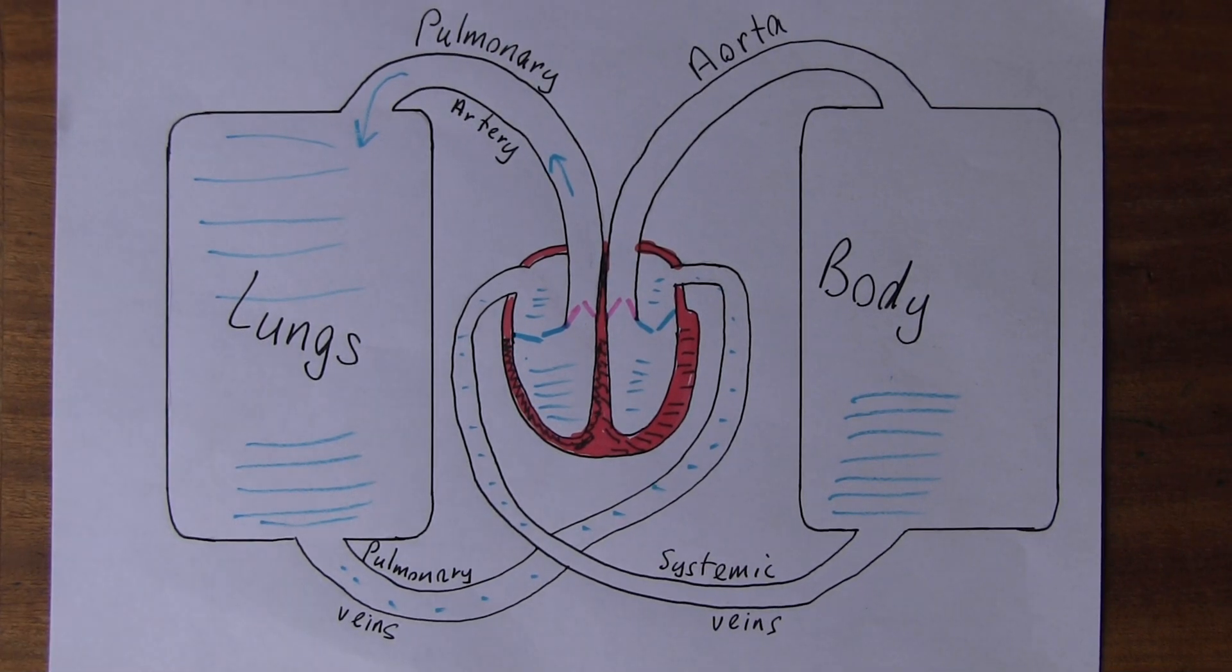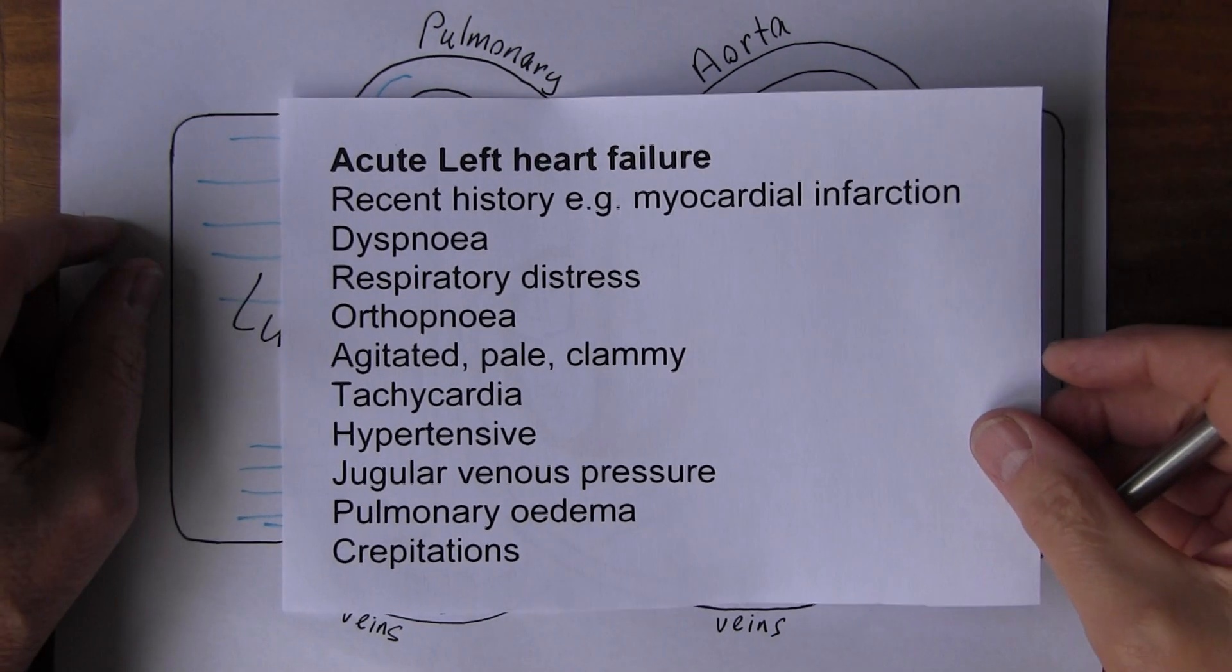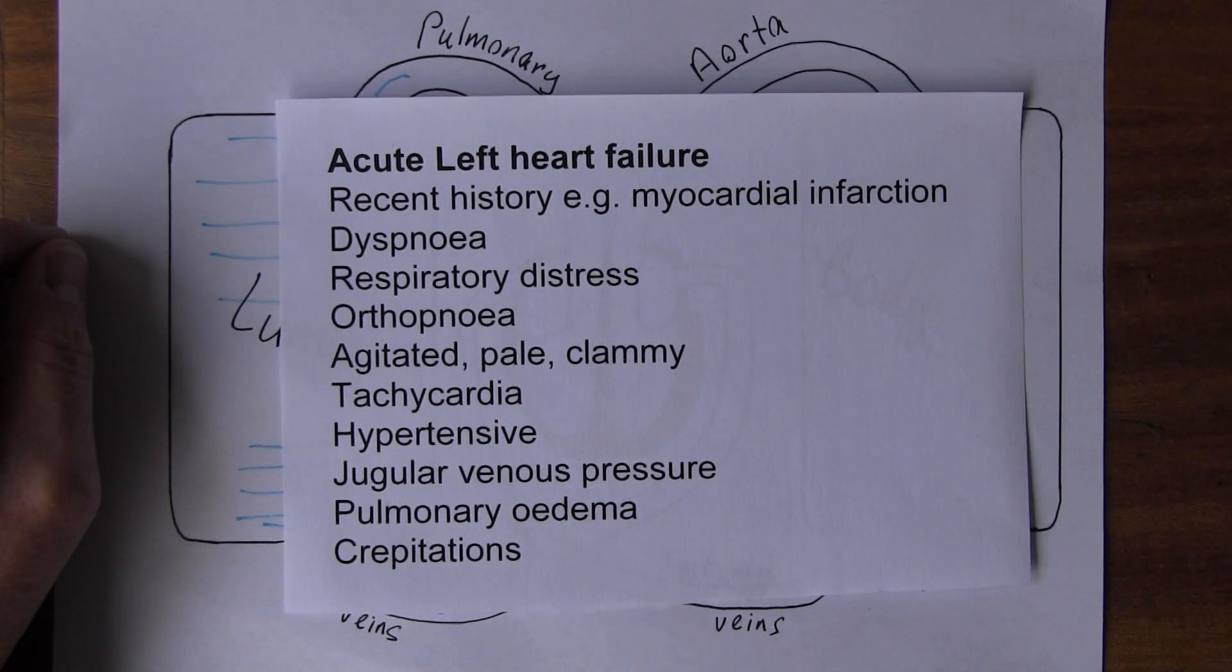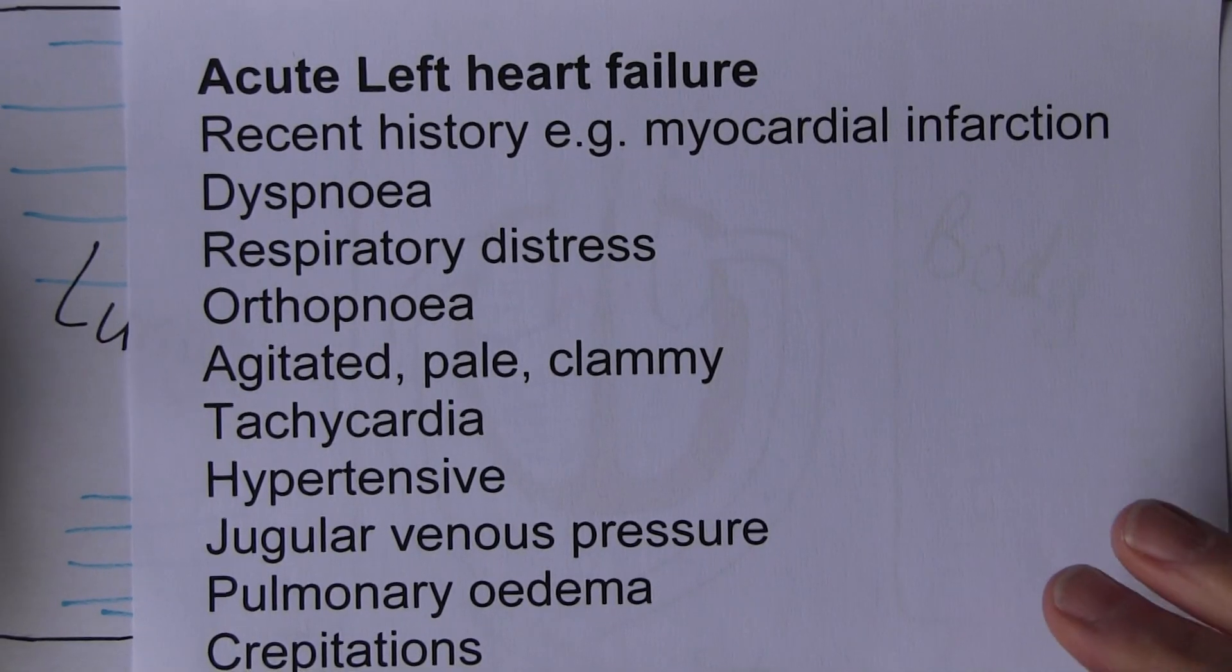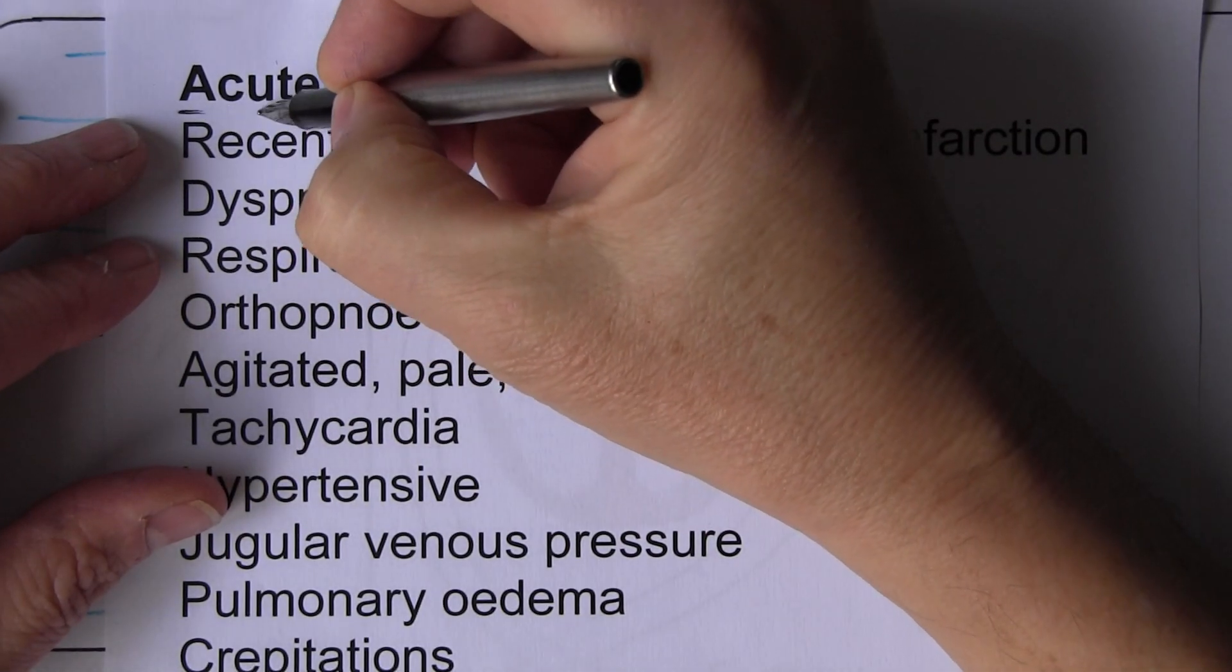We're still thinking about the features of heart failure but I wanted to differentiate between acute and chronic because this sometimes causes confusion. Acute means of recent onset, it's just started.